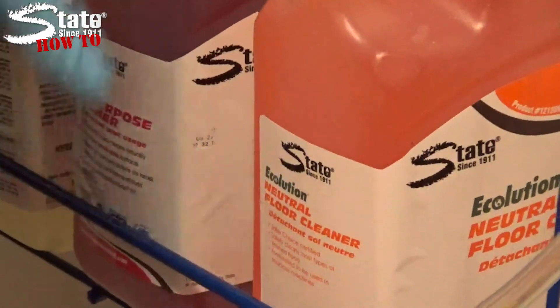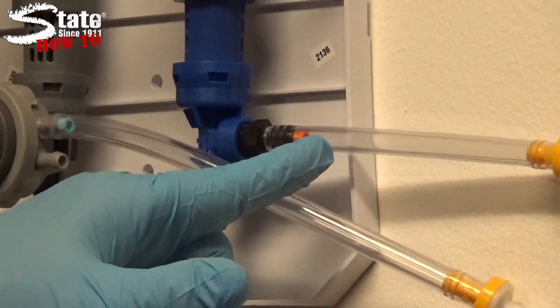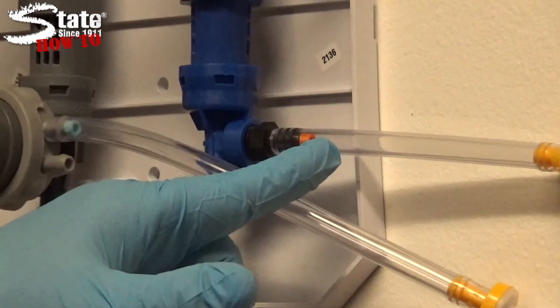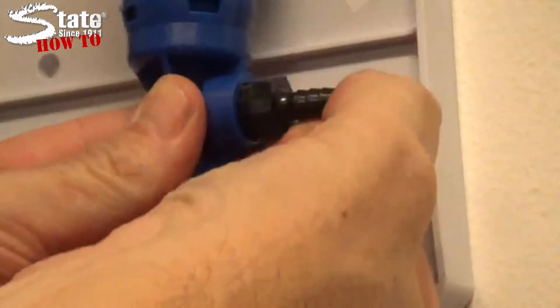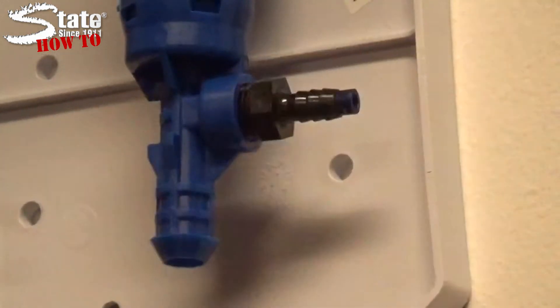In order to ensure the correct dilution of your chemicals, it is important to use the proper color dilution tip listed on the One Solution tip chart provided by State Industrial Products. Be sure to check whether the tip is for quart bottle fills or bucket fills. Insert the tip into the corresponding hose barb on the dispenser.